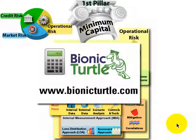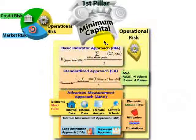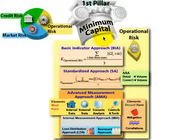Hi, this is David Harper, Bionic Turtle, with a quick introduction to operational risk under Basel II. This is especially for my FRM candidate customers. To keep this in perspective, recall that Basel has three pillars, and it's the first pillar that contains the quantitative rules that determine the minimum capital requirements for the bank.